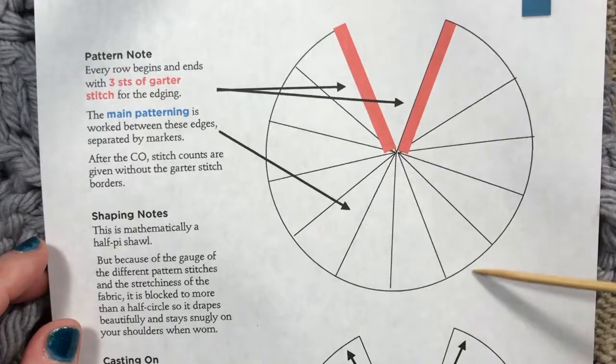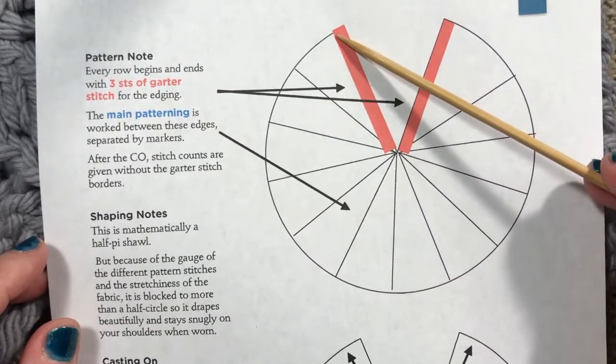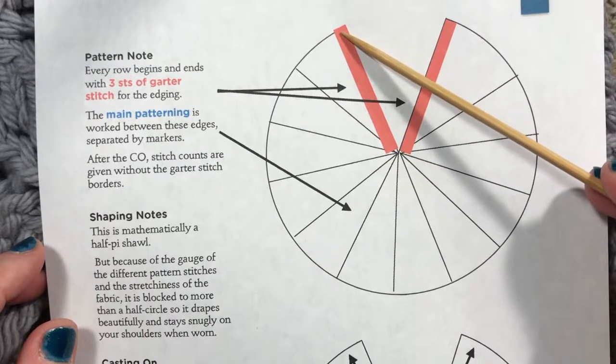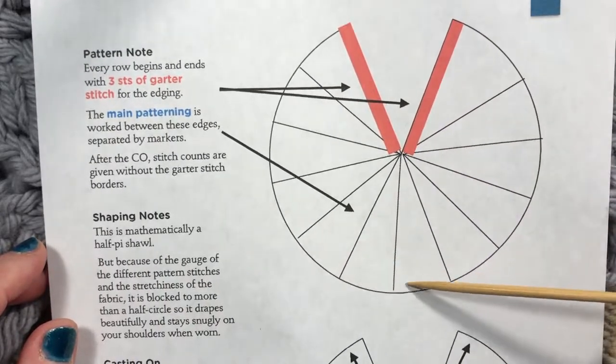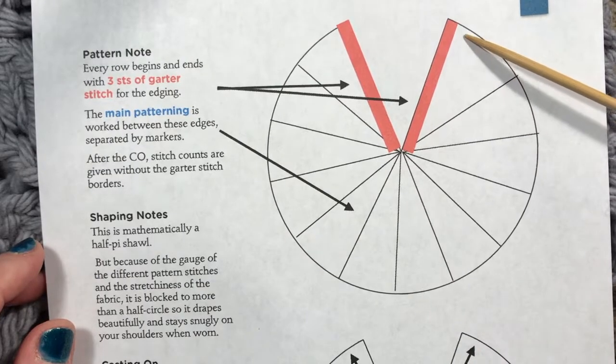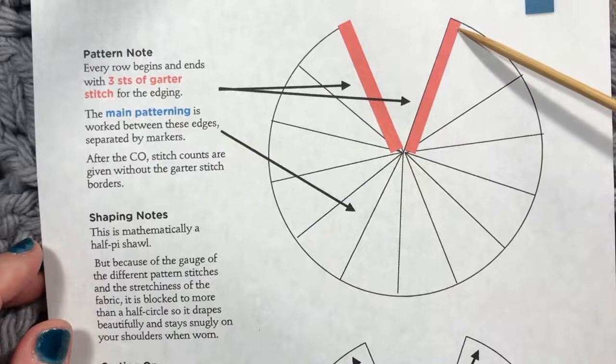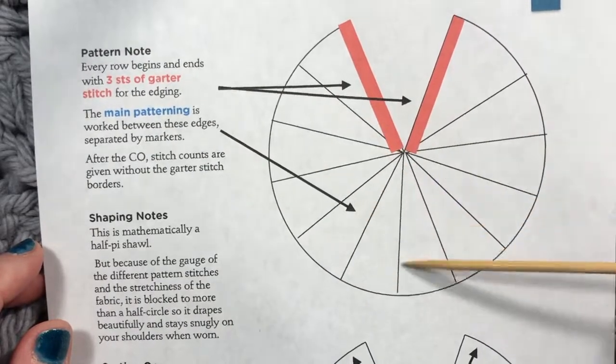So start with a whole bunch of stitches. Throughout the shawl, you're going to have three stitches knit, then whatever the pattern is - the lace pattern, the border pattern, wherever you are - then three stitches at the end. You'll put markers there to separate them, and you're going to have this garter stitch edge going throughout the whole thing.